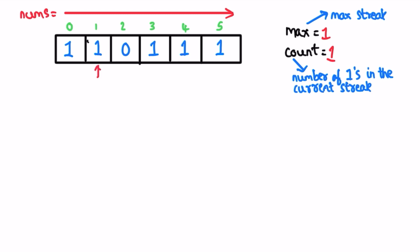Count will become two. Max of count and max is two, so max will also become two. Now go for the next element, it is zero, so make count zero and check max of count and max. Max of count and max is two, so max will remain two.